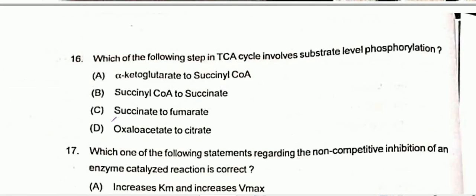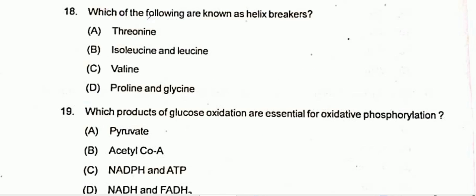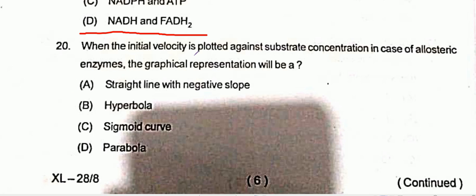Question 16: Which step in the TCA cycle involves substrate-level phosphorylation? Option B is correct: succinyl-CoA to succinate. Question 17: Regarding non-competitive inhibition, Km is constant, but all the given options are incorrect. Question 18: Which of the following are known as helix breakers? Option D: proline and glycine. Question 19: Which products of glucose oxidation are essential for oxidative phosphorylation? Option D: NADH and FADH₂. Question 20: When initial velocity is plotted against substrate concentration for an allosteric enzyme, Option C is correct: a sigmoid curve.